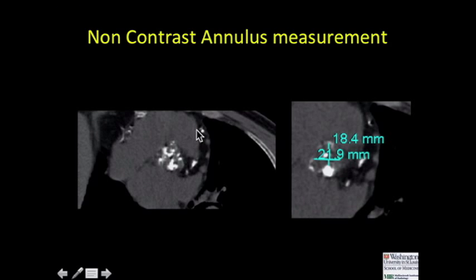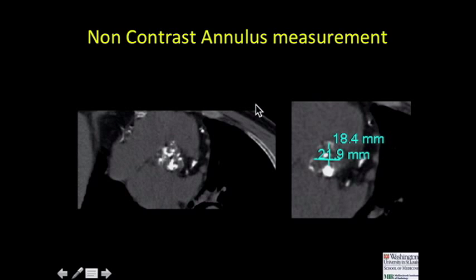On non-contrast studies, we also get a very nice look at the degree of calcification of the annulus and aortic valve, which is important for our cardiology colleagues. Through the annulus itself, we measure anterior to posterior and medial to lateral as best we can.